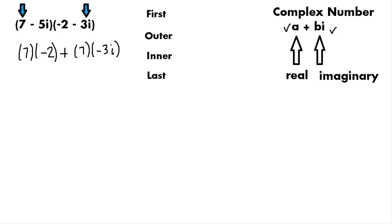Now we do the inner terms and the two inner terms are negative 5i and a negative 2. And then finally we do the last terms. And the last terms are negative 5i and negative 3i.